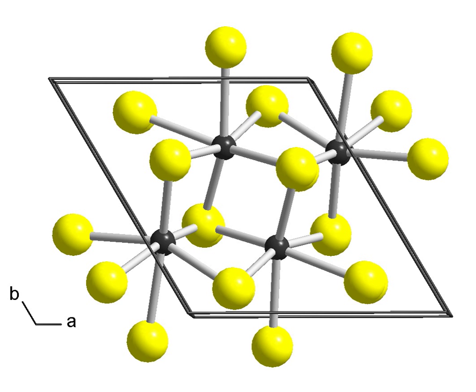Rhenium disulfide is an inorganic compound of rhenium and sulfur with the formula ReS2. It has a layered structure where atoms are strongly bonded within each layer. The layers are held together by weak van der Waals bonds and can be easily peeled off from the bulk material.